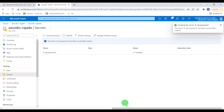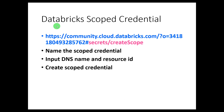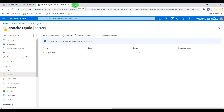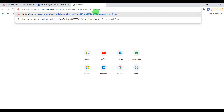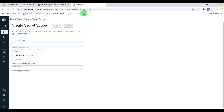The next step is to create a Databricks scoped credential. To do this, we use a specific URL where the blue highlighted part is the workspace URL — unique to each workspace. The workspace name and workspace ID (e.g., 3418) are part of this URL, while the suffix path is a constant and does not change. When creating a scoped credential for your project, you only need to replace the workspace URL portion. Let me open this URL in the browser — it takes us to the page where we can create a secret scope for Databricks.